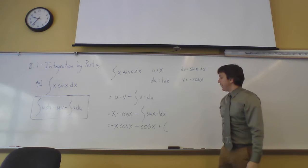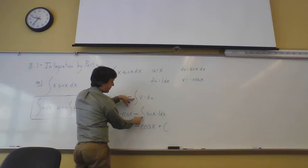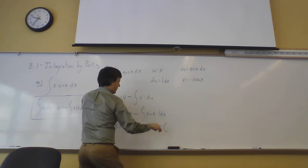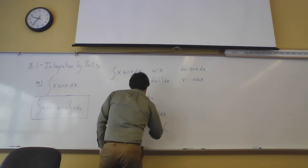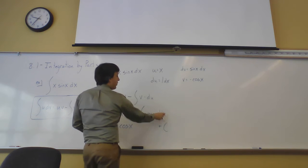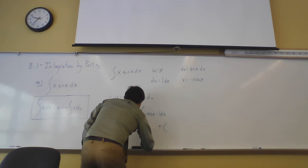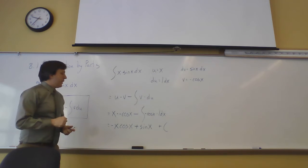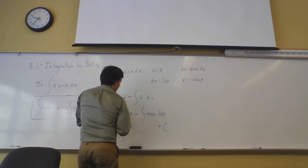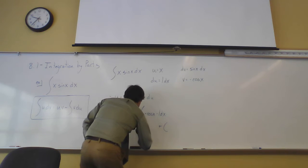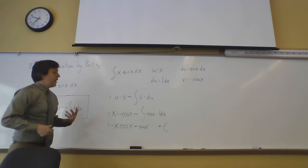Bringing the formula over: u·v gives x·(−cos x), minus the integral of v·du, which is (−cos x)·(1 dx). Taking the anti-derivative of −cos(x) gives −sin(x), but the two negatives combine to make a plus, so the result is x·(−cos x) + sin(x). Be careful with those negative signs.